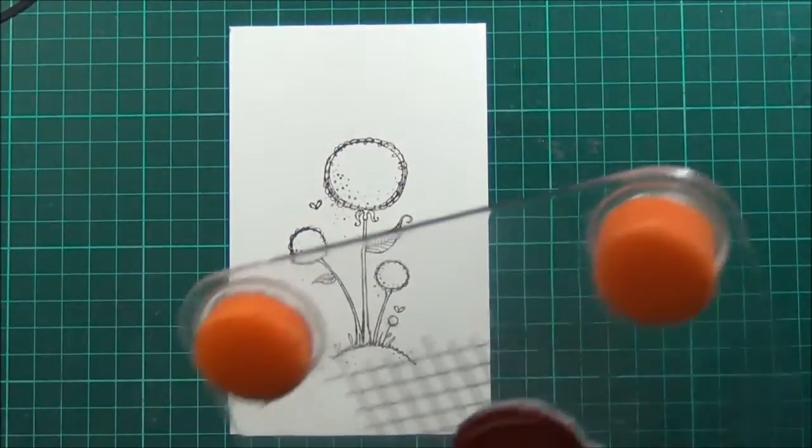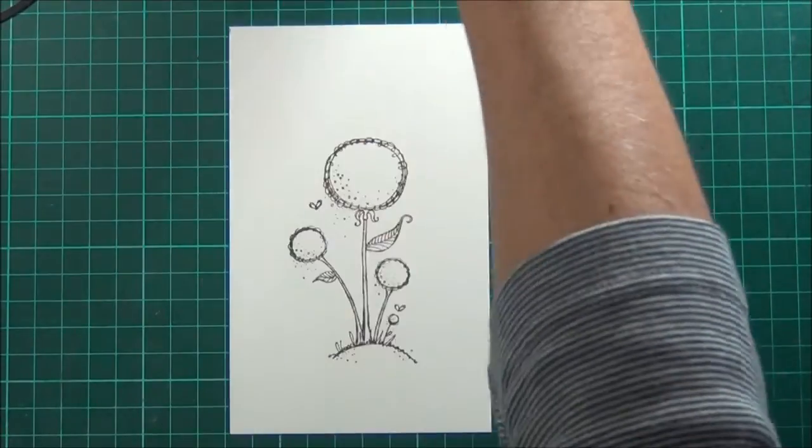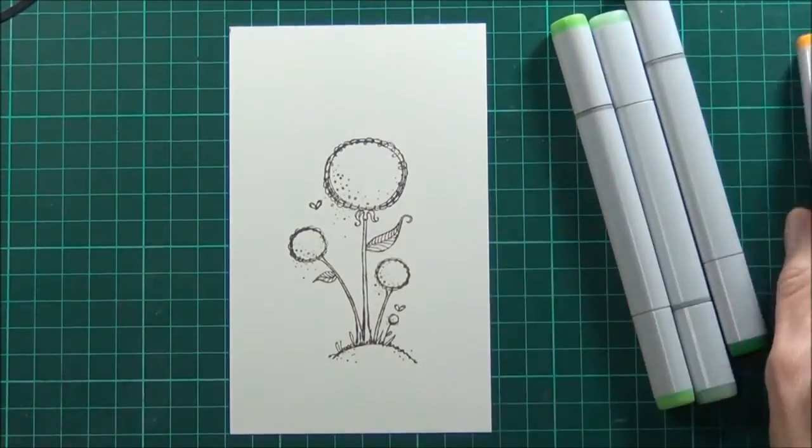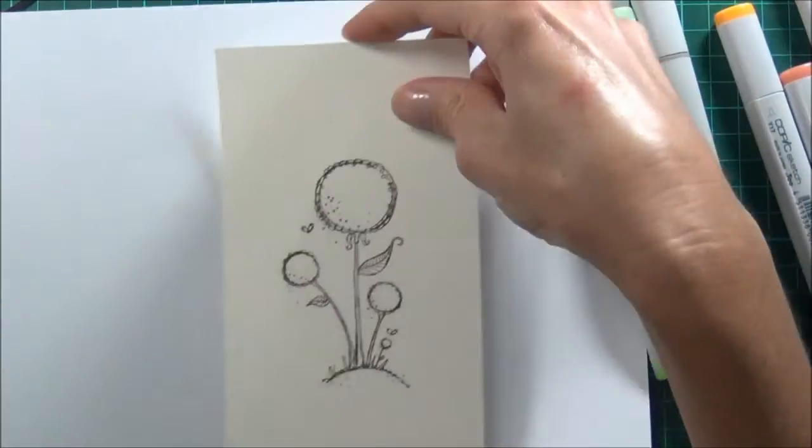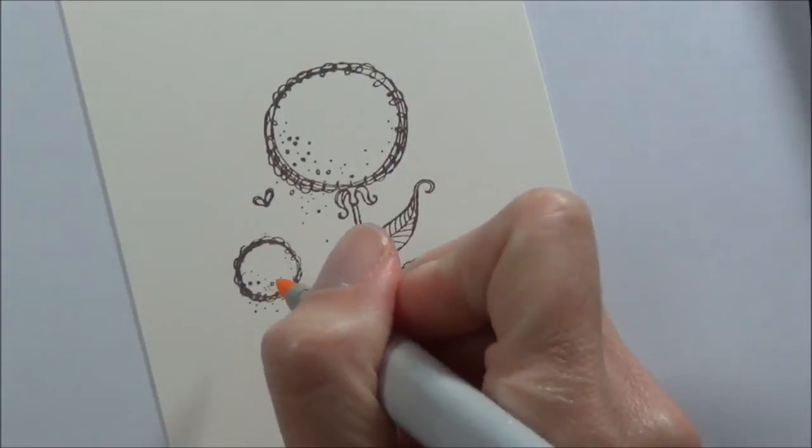I'll just give that a couple of seconds to dry and I'm going to do some Copic coloring. I'll have all the colors listed at my blog, and you can head over there. The link will be below this YouTube video. I'll just focus on laying down a bit of color.